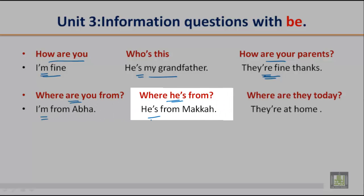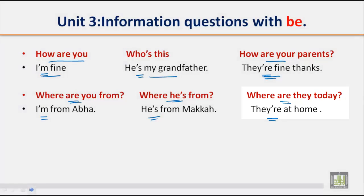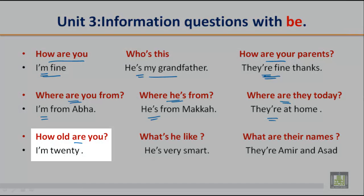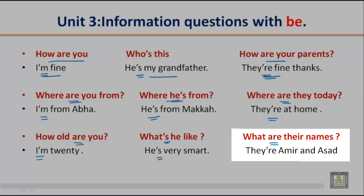'Where is he from? He is from Makkah.' 'How old are you? I am 20.' 'What is he like? He's very smart.' 'What are their names? They are Amir and Asad.'